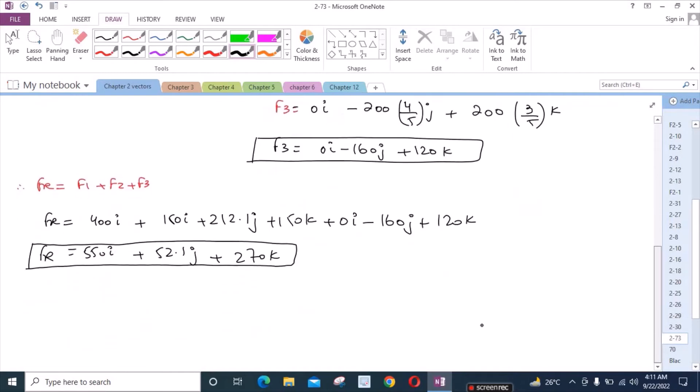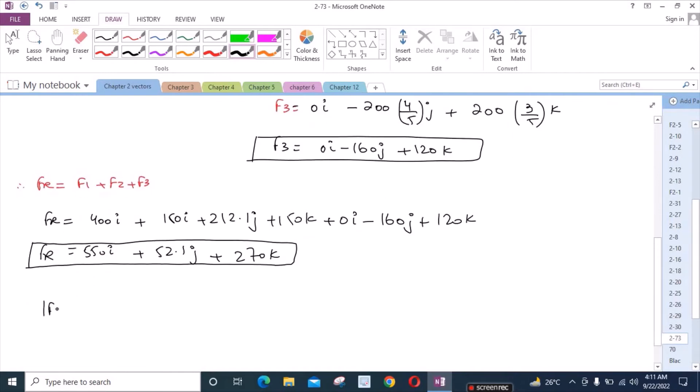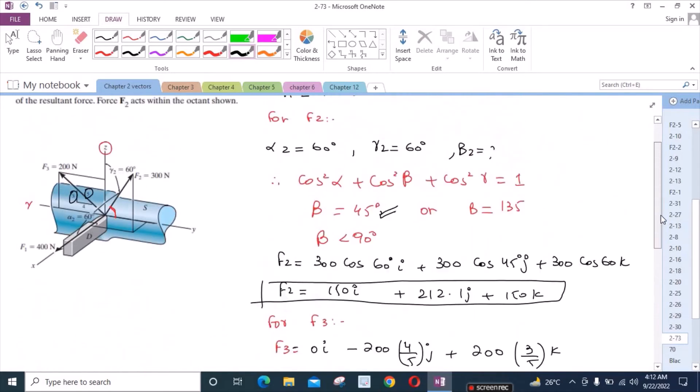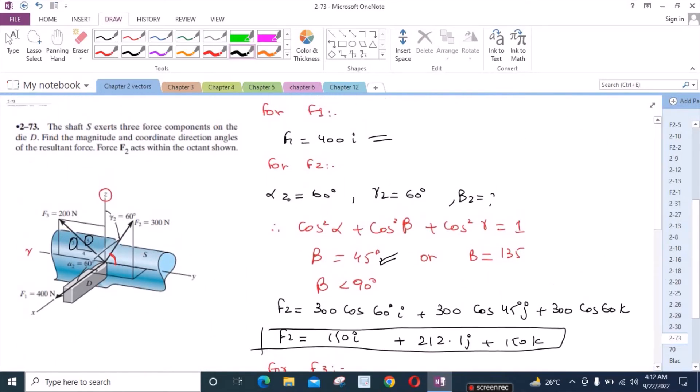Now for the magnitude of FR force, we have to take the square of all three components and then take the square root. From here, FR is equal to 615N. Now we have found the magnitude.